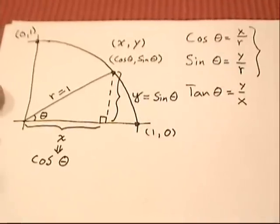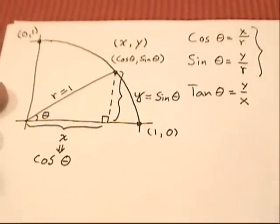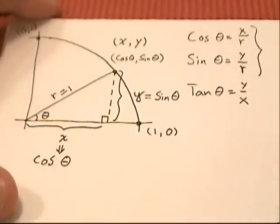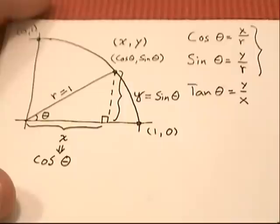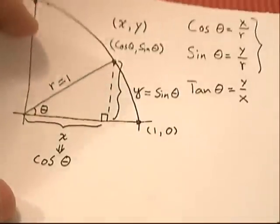That's going to make some calculations a lot simpler. So let's start doing this with 30 degrees, 45 degrees, and 60 degree triangles.